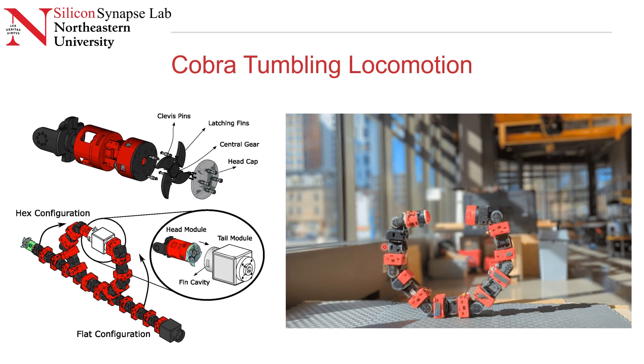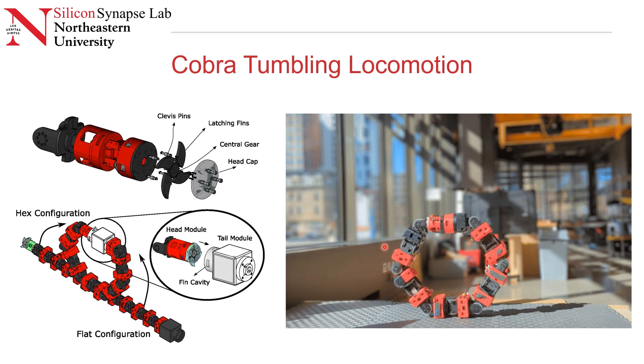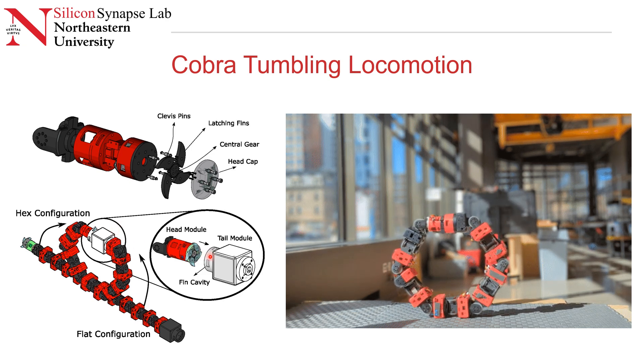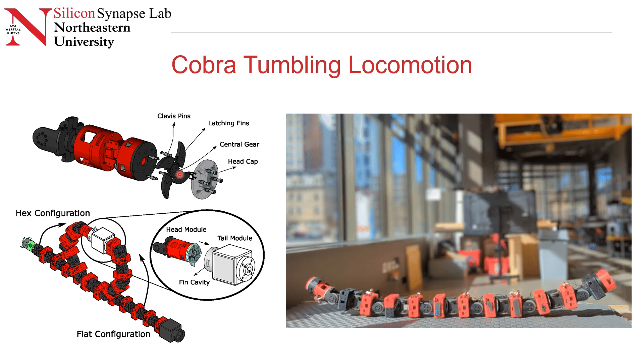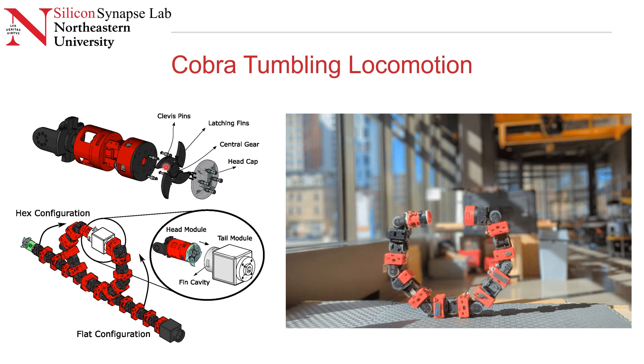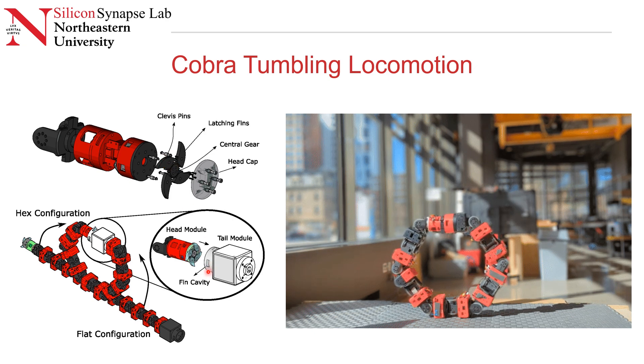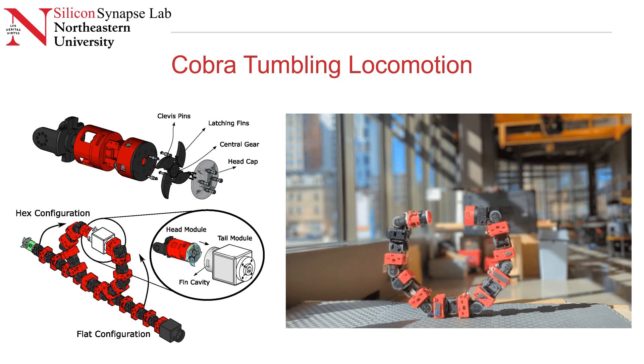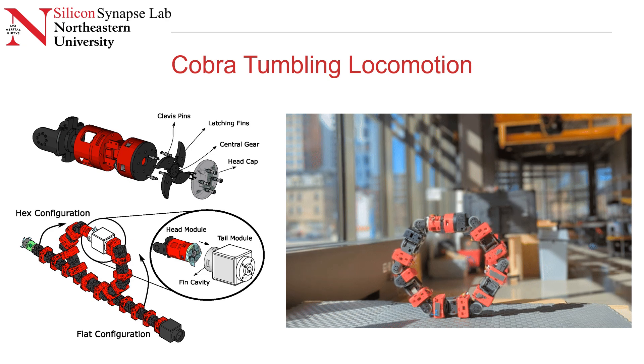This is a closer look at the way that Cobra goes into its tumbling configuration. It raises its head and tail up and aligns them together such that the head goes into this docking module on the tail. It has a single gear in the head that actuates these fins, which go and sit inside this cavity in the tail module, locking it in place passively. Once this is locked in place, it's able to passively hold this without using a lot of energy.